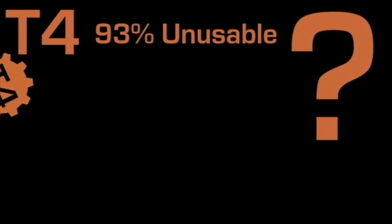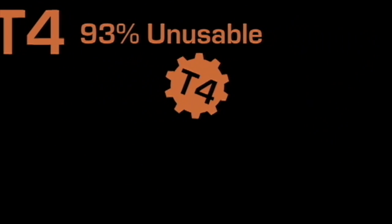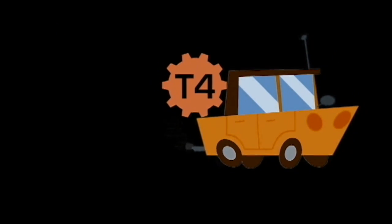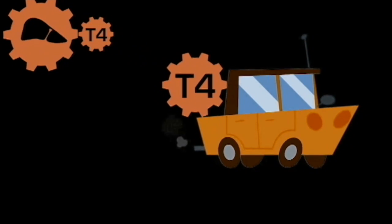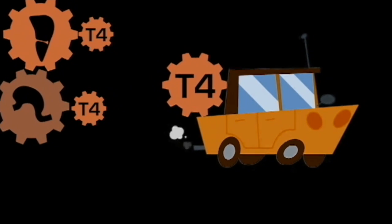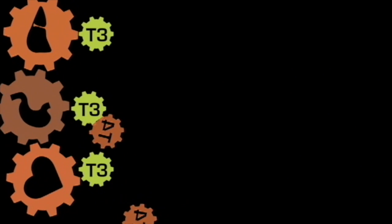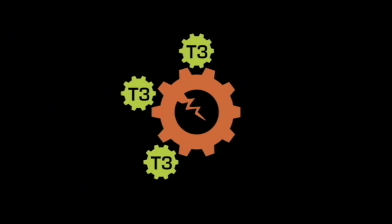So what happens to this large amount of unusable T4? Well, your body has to transport it through the bloodstream, hitching a ride on something called the thyroid binding globulin where it's delivered to the liver, the gut, muscle, heart, and nerve tissue to be converted to the usable T3 form before being sent to do its job at the cells.